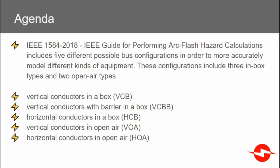The 2018 version of the IEEE guide for performing arc flash hazard calculations includes five different possible bus configurations in order to more accurately model different kinds of equipment.